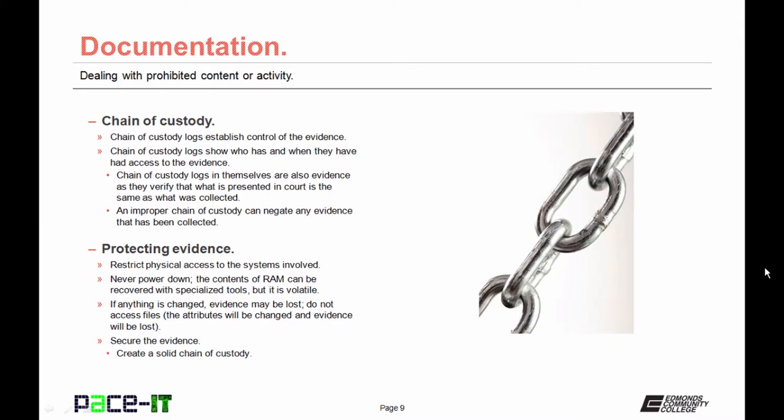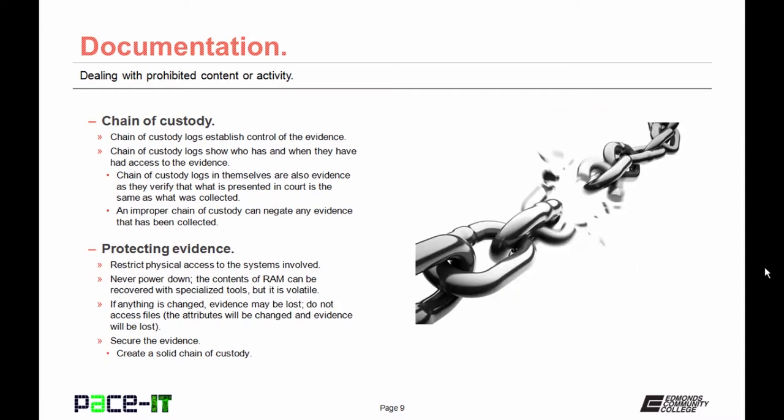Chain of custody logs establish control of the evidence. They show who has had access and when they have had access to the evidence. Chain of custody logs are themselves evidence, as they verify that what is presented in court is the same as what was collected. An improper chain of custody log can negate any evidence that has been collected.